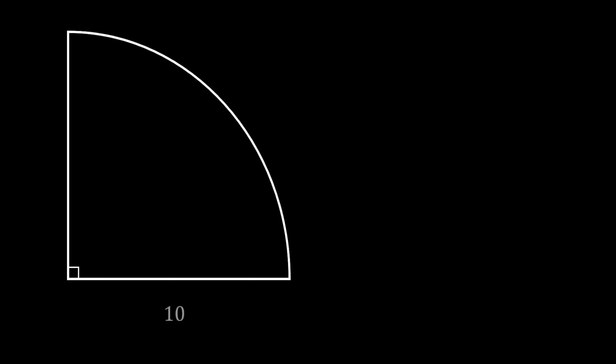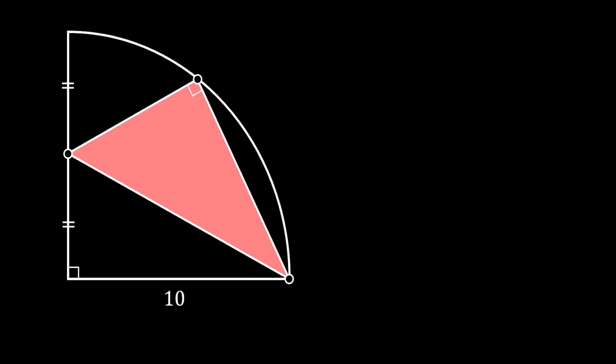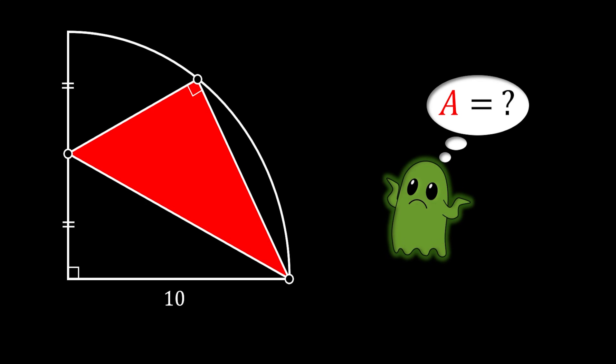Let's start with a quarter circle with a radius of 10. On the left radius we will put the point which divides this radius into two identical segments. Then we will put another point on the bottom right corner of our quarter circle, and one point on the arc in such a way so that if we connect all three points we get an inscribed right triangle. The question is: can we calculate the area of this red right inscribed triangle?